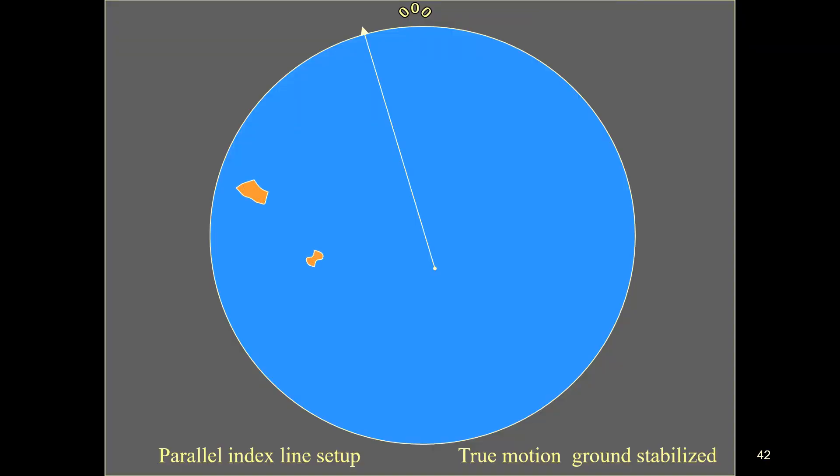The engraved parallel lines on the face of the bearing cursor can be used as an aid to drawing the index lines on, say, a reflection plotter, and to supplement the bearing cursor.